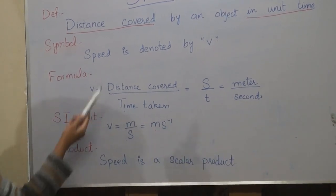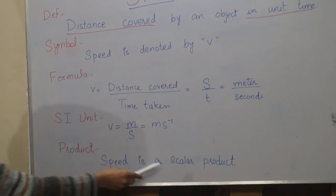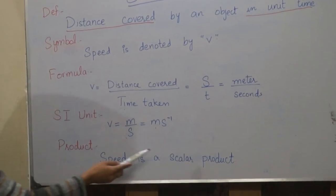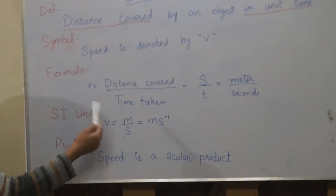And what is the speed? It's a scalar product or a vector product. It's a scalar product. Because speed has no direction.